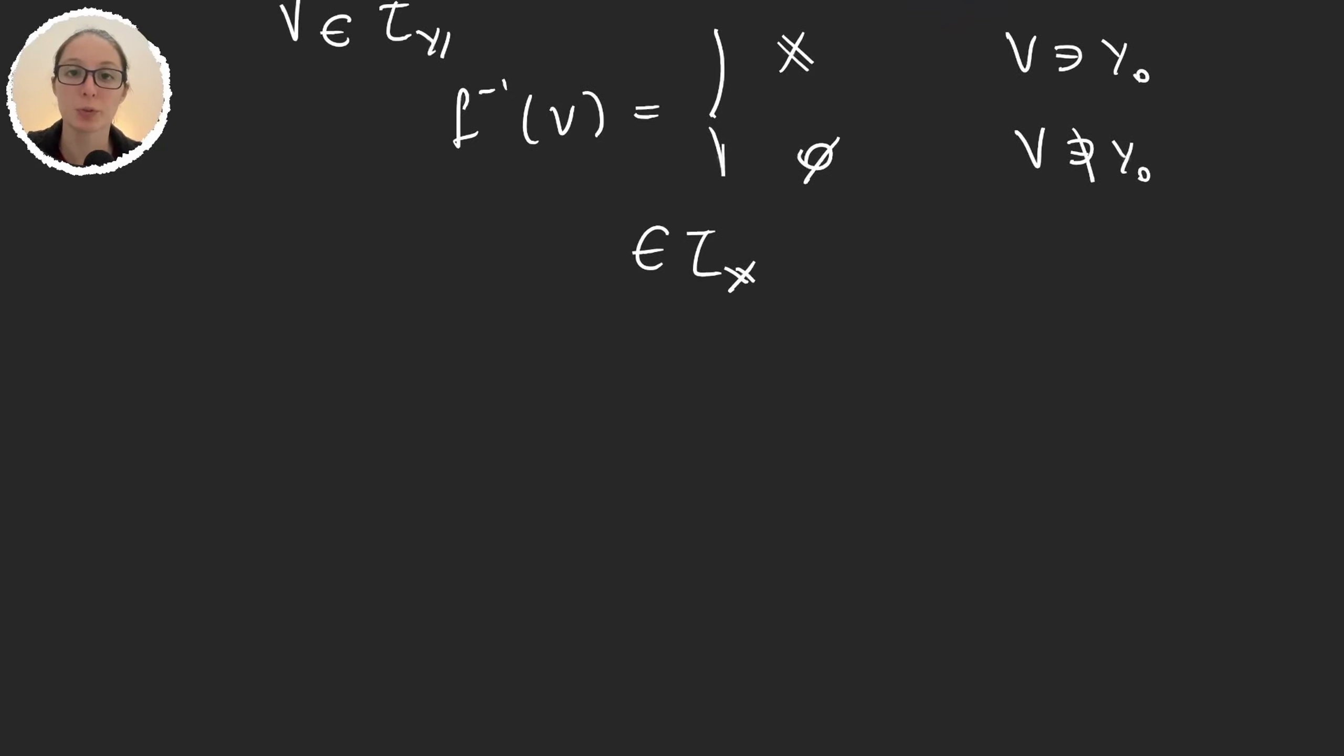Now let's suppose we have two functions, f and g. So f goes from x to y, and g from y to another space z, and that these two are continuous, then g composed with f is also continuous.